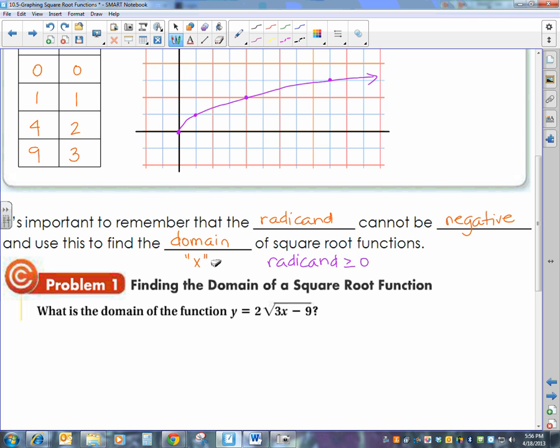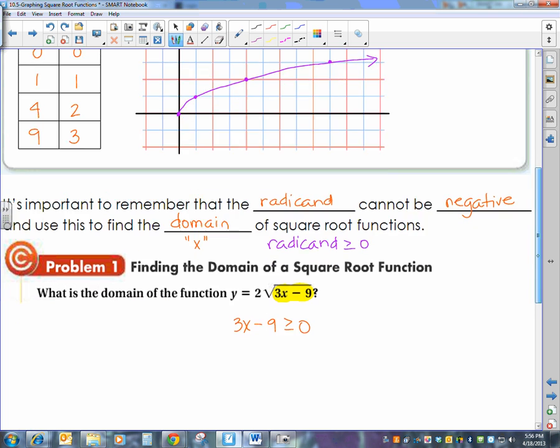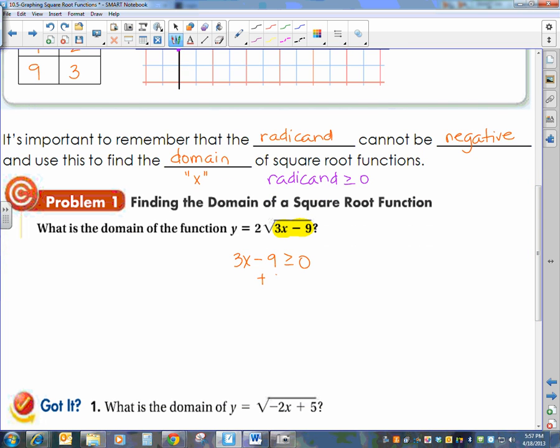So to do that, we have to go identify the radicand and make sure that radicand is greater than or equal to 0. So in my first problem, my radicand, that's the part underneath the radical, is 3x minus 9, which has to be greater than or equal to 0. Then we're going to add 9 to both sides, so 3x is greater than or equal to 9. Divide both sides by 3, and x is greater than or equal to 3.